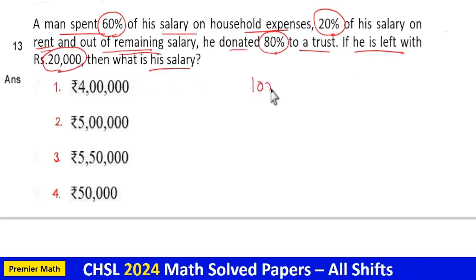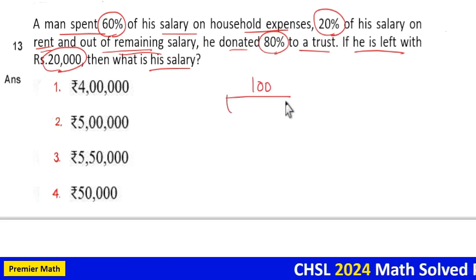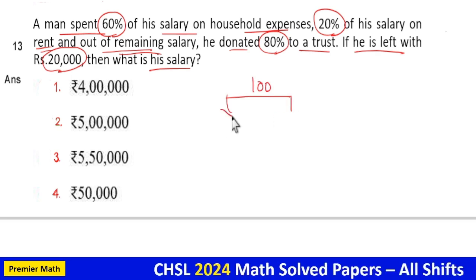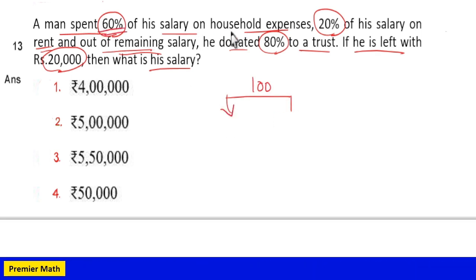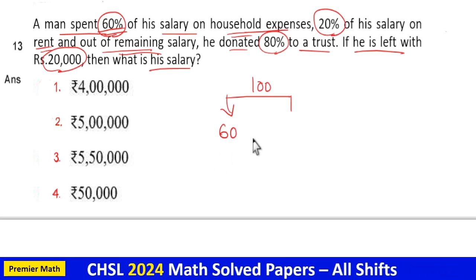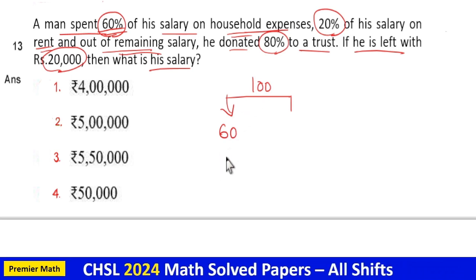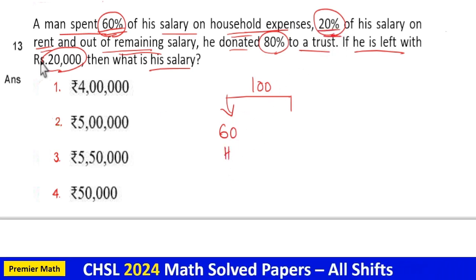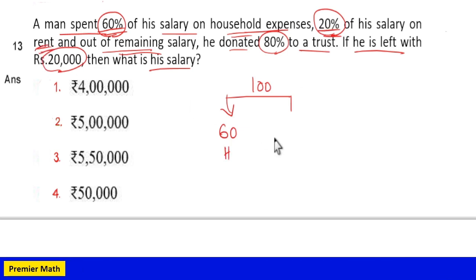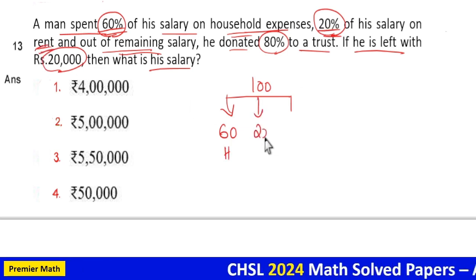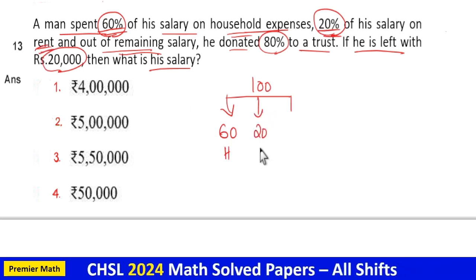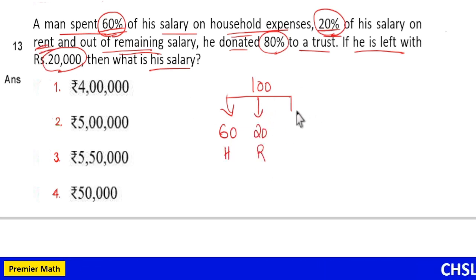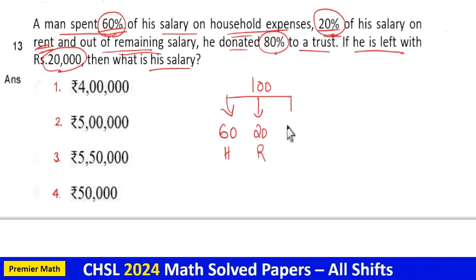Consider 100 rupees as the salary. Out of 100 rupees, he spent 60% — that is 60 rupees — on household, and 20% — that is 20 rupees — on rent. The remaining is 20%, which is 20 rupees.